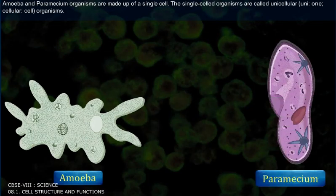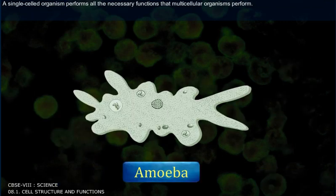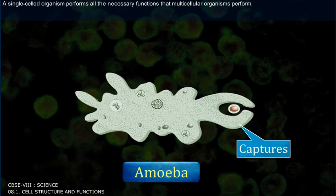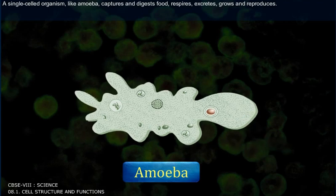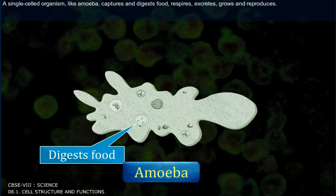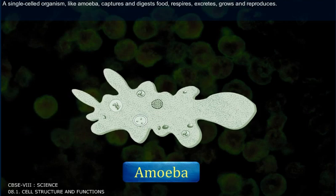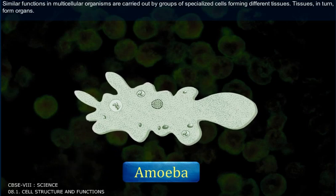Amoeba and paramecium are organisms made up of a single cell. These single-celled organisms are called unicellular organisms. A single-celled organism performs all the necessary functions that multicellular organisms perform. Amoeba captures and digests food, respires, excretes, grows and reproduces. Similar functions in multicellular organisms are carried out by groups of specialized cells forming different tissues, which in turn form organs.